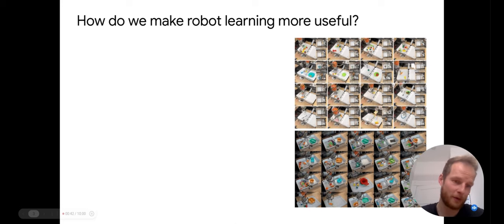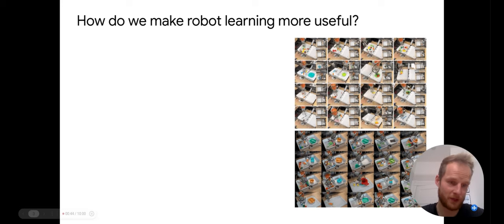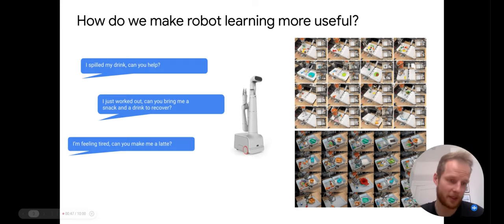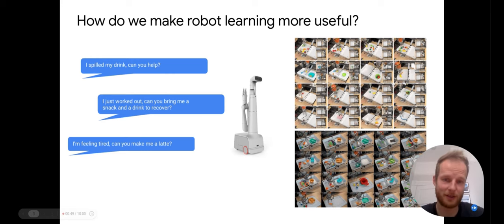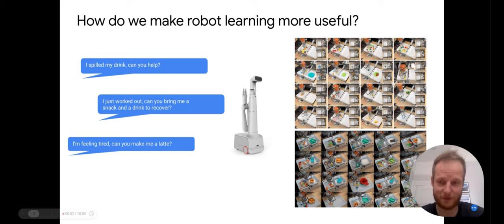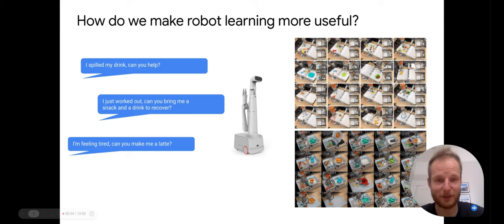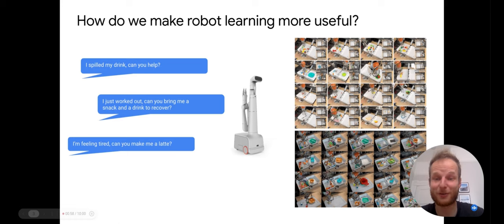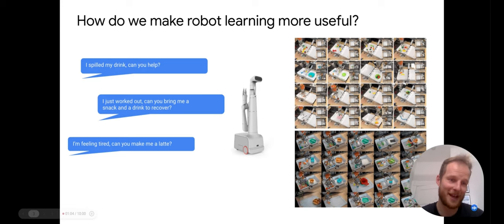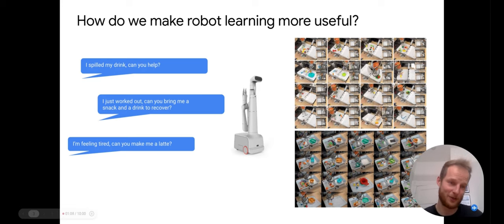However if we were to compare it to the goal where we eventually want to be, where we would maybe want to have a mobile manipulator and you would want to just talk to it and have it accomplish everything you can ask for — things such as 'I spilled my drink, can you help?' or 'I just worked out, can you bring me a snack and a drink to recover?' or 'I'm feeling tired, can you make me a latte?' — we can see that there's quite a big gap between where we currently are and where we eventually want to be.